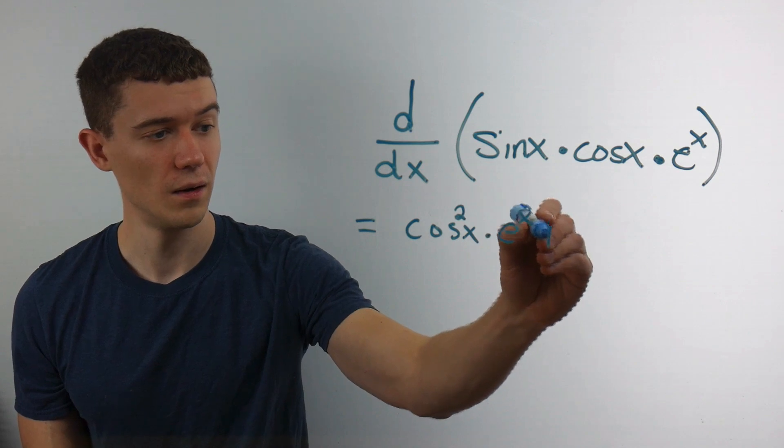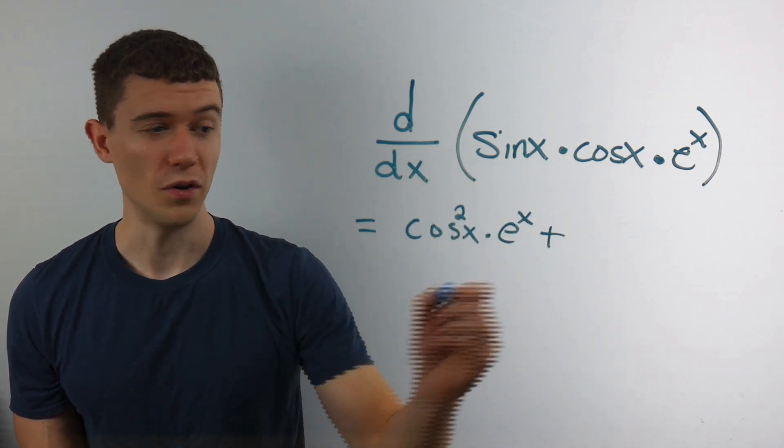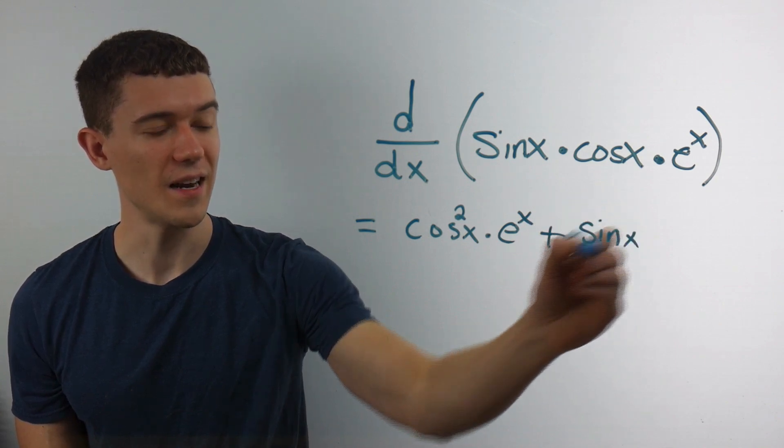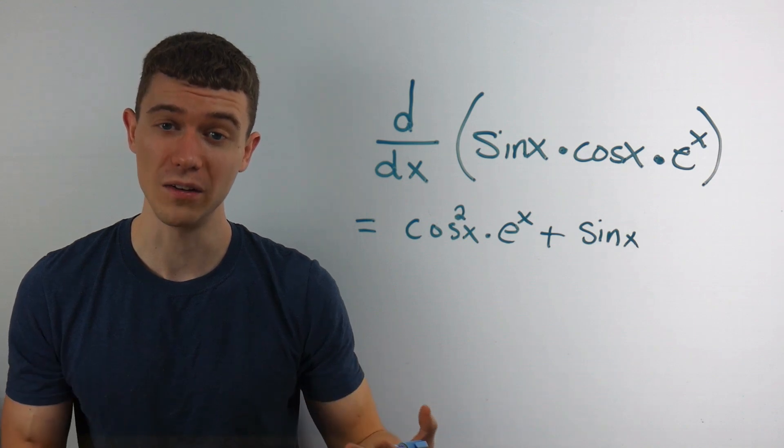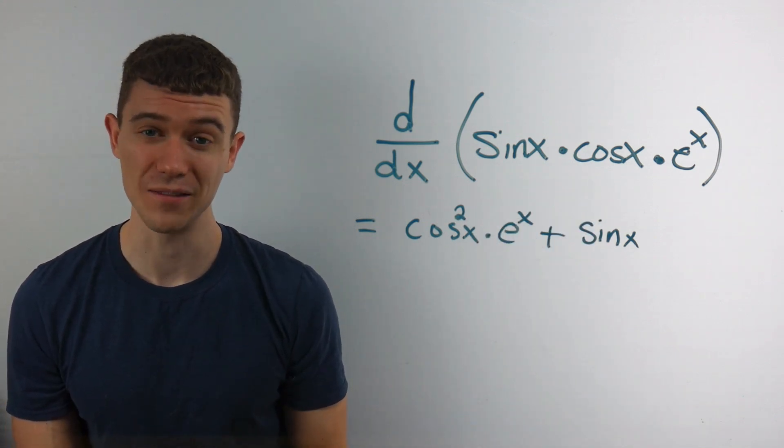And then it's plus. I copy the other two functions. So I copy the sine x and I take the derivative of the second function. Just like the regular product rule for derivatives, the derivative of cosine is negative sine.